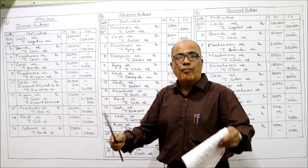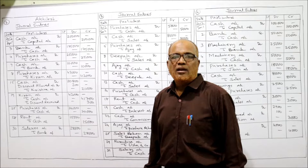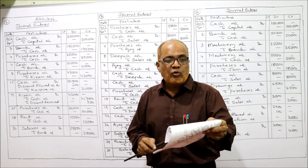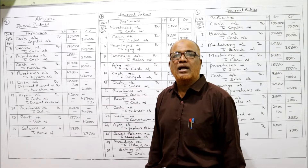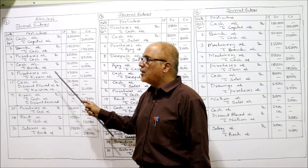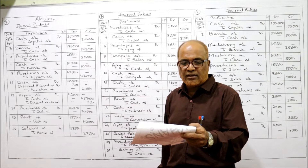Next, 8th: bought goods from Kiran on credit. Bought means purchases — debit purchases. It's a credit purchase, so we check from whom we purchased. From Kiran, so purchases account debit to Kiran account 42,000. Being the goods purchased from Kiran on credit.